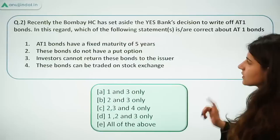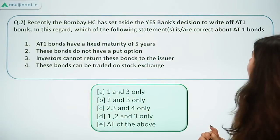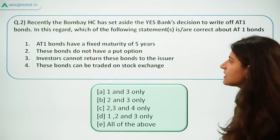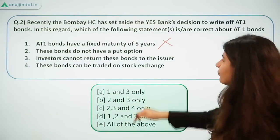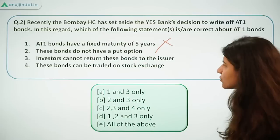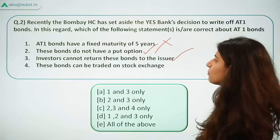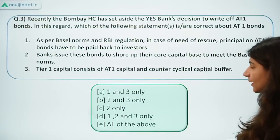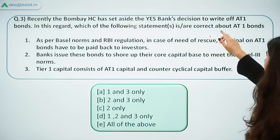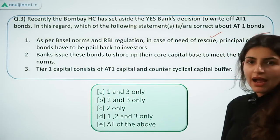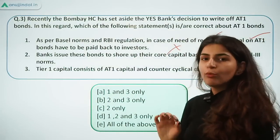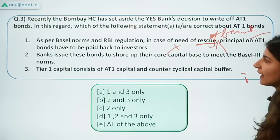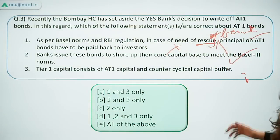Now let's go through some practice questions. The Bombay High Court has set aside Yes Bank's decision to write off AT1 bonds. Which of the following statements about AT1 bonds are correct? Statement A: AT1 bonds have a fixed maturity of 5 years — this is false, because they are perpetual and have no fixed maturity. Statement B: These bonds do not have a put option — that is true, investors cannot return these bonds to the bank. Statement C: These bonds can be traded on a stock exchange — that is also true. As per Basel norms and RBI regulations, in case of need of rescue, the principal on AT1 bonds does not have to be paid back — they can be written off. Banks issue these bonds to shore up their capital base to meet Basel 3 requirements — true. Tier 1 capital consists of Common Equity Tier 1 and Additional Tier 1.